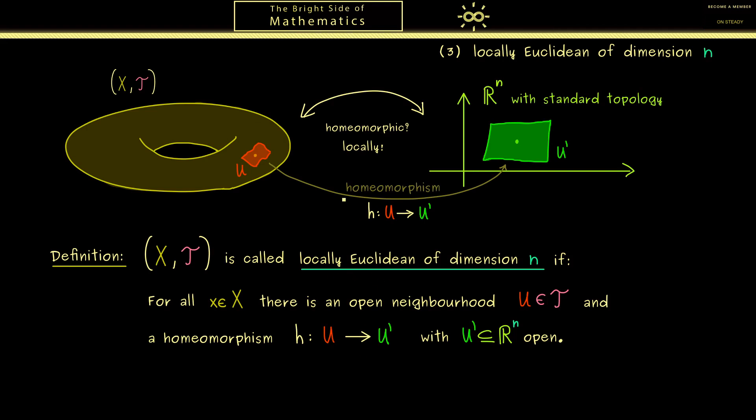And moreover, such a homeomorphism h is then called a chart. So what you should see here is with such a chart, we are able to calculate on the manifold, not globally but locally.